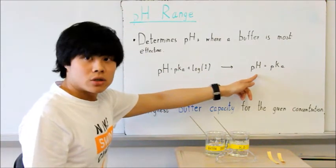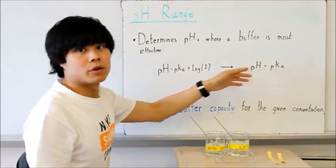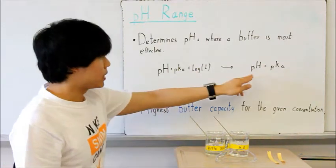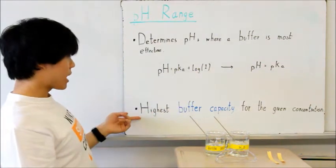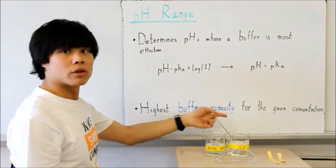Therefore, your pH will equal to pKa. So, if you were to make a buffer that's the most effective, you would want your pH to equal pKa, where you would get the highest buffer capacity for the given concentration.